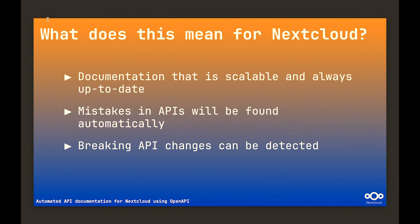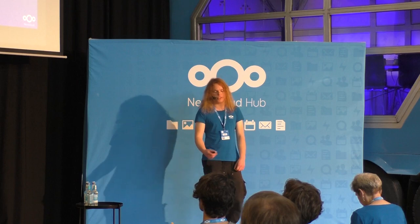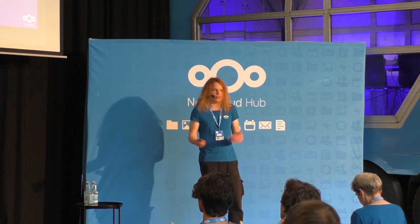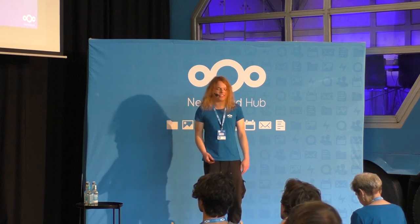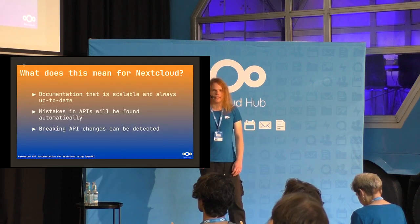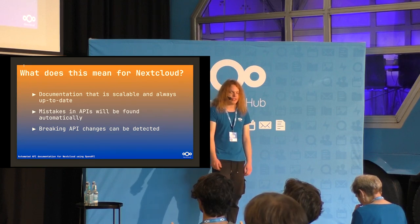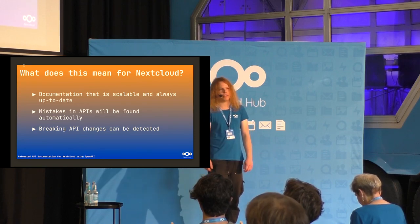The documentation itself is scalable and you can make sure it's always up to date by using CI. This also allows you to find mistakes in the API — while I was documenting all the server apps, I found multiple bugs in the implementations for some corner cases that probably never occurred yet. Using other tools it's now possible to make sure that you don't introduce breaking changes in the API, so that can also be part of your CI pipeline.